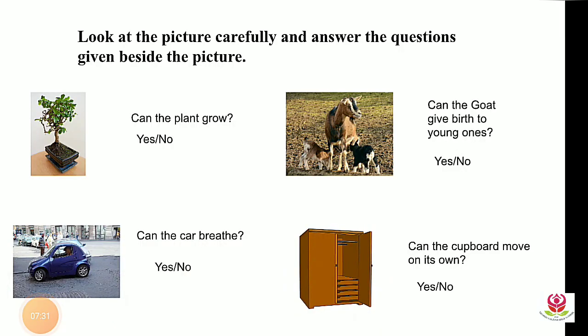Now let's look at some examples. Look at the pictures carefully and answer the questions. Can a plant grow? Yes, because it is a living thing. Can a car breathe? No, because it is a non-living thing. Can a goat give birth to a young one? Yes — the young one of a goat is called a kid. Can a cupboard move on its own? No, because it is a non-living thing.